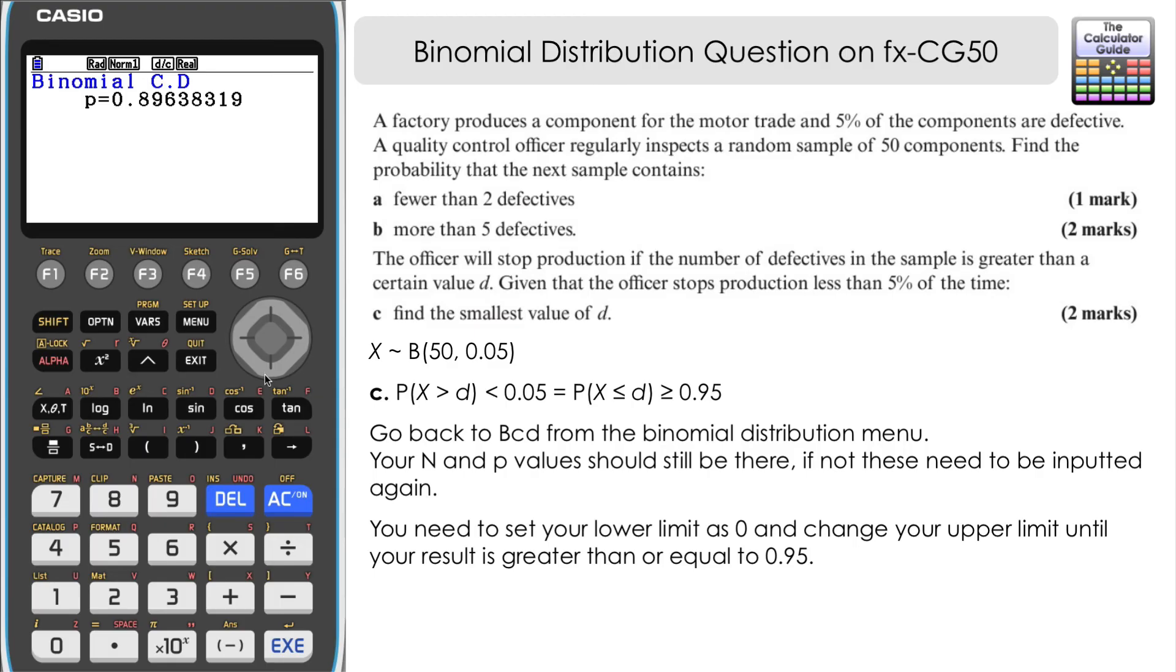And so one more time, if we go to exit and go back and change that to five. So remember five is a result that was given by the inverse binomial. Press equals here, we can see that the probability is 0.96. So that's 96%. That's over the 95% limit, which means we'll have less than 5% remaining. So that will be the critical value that we'll have for this.